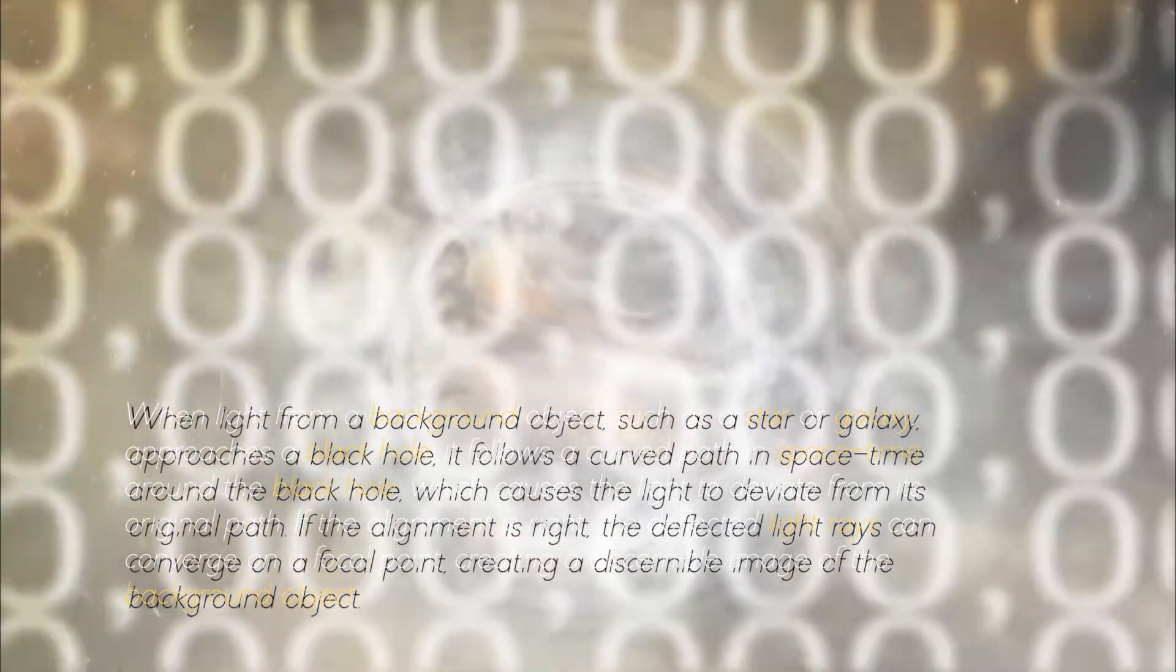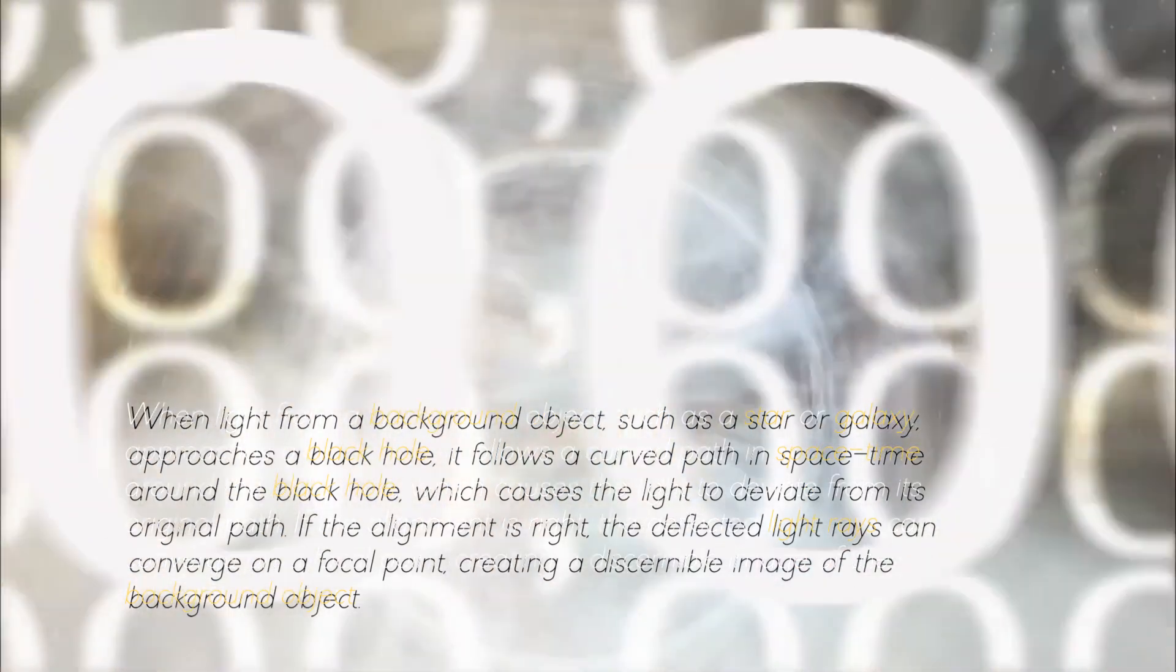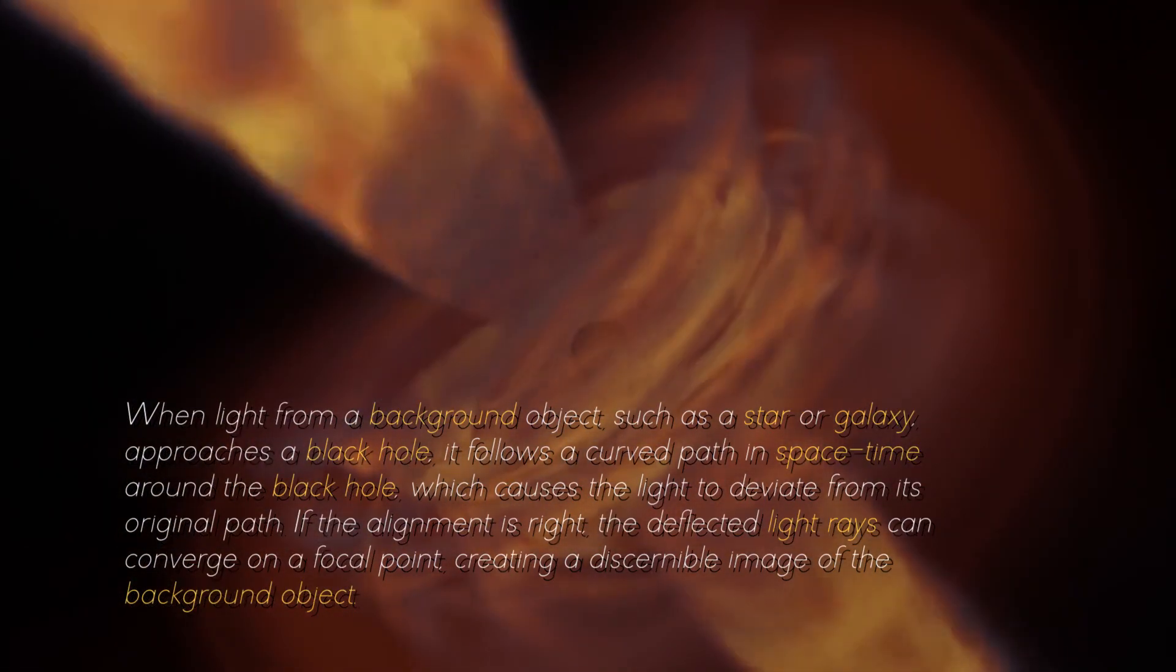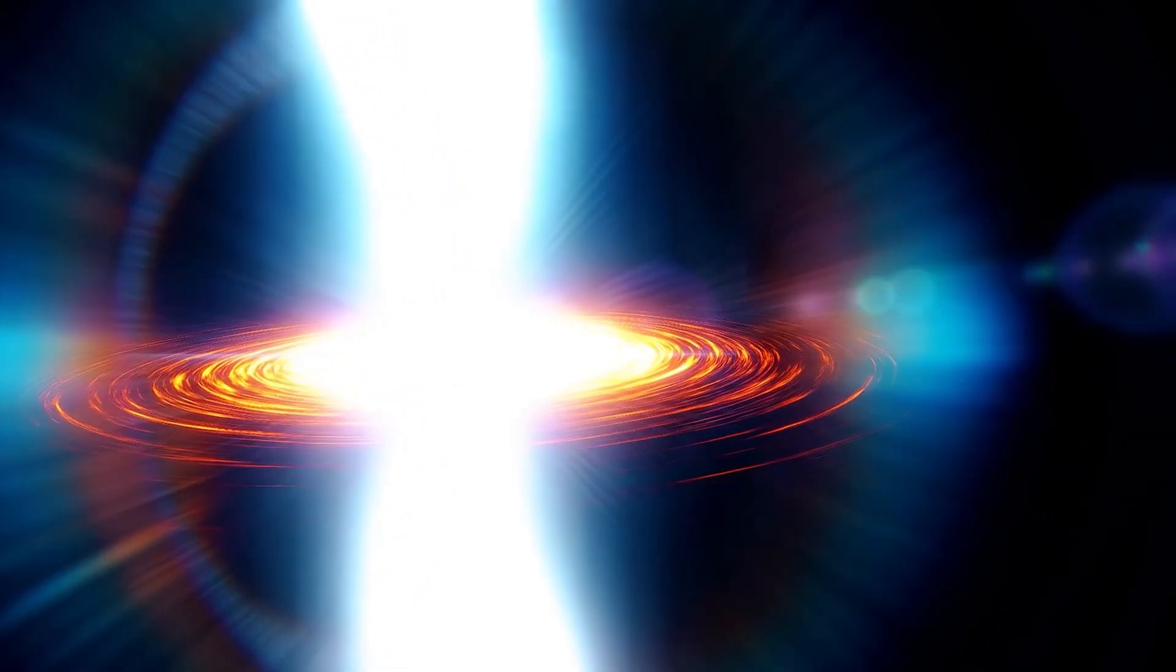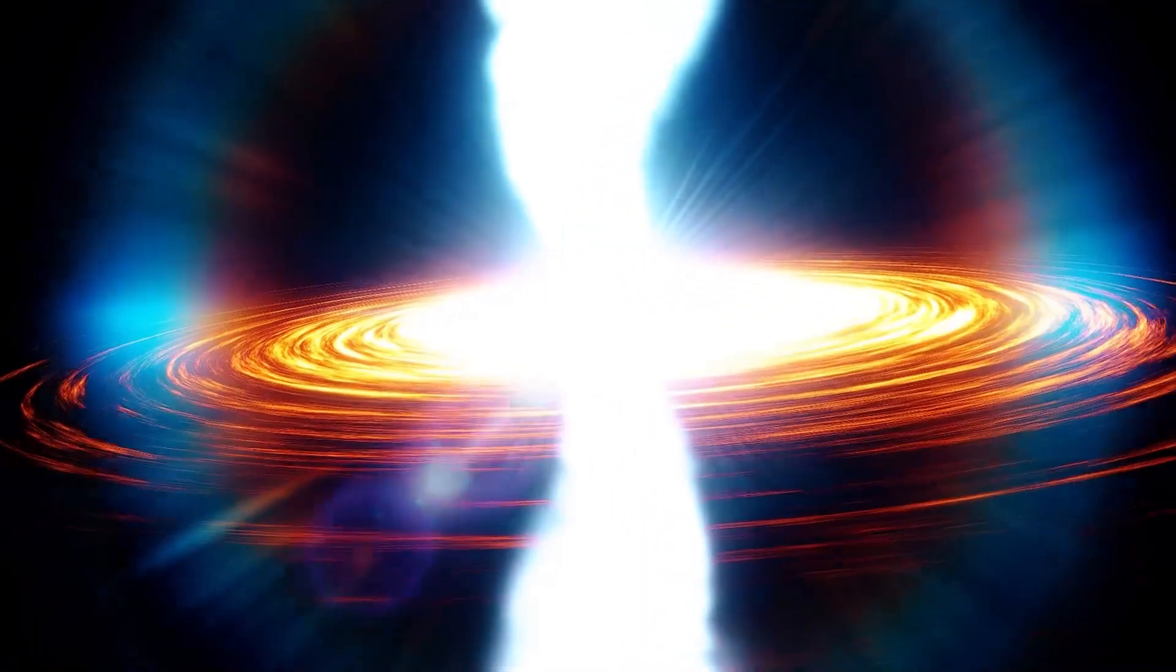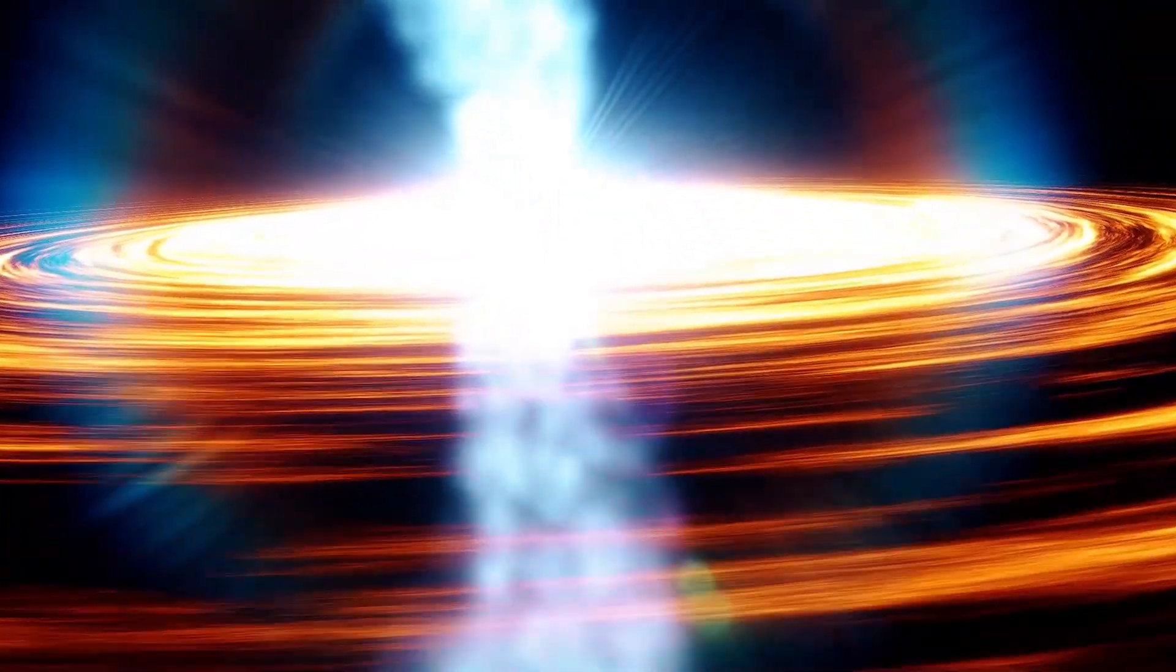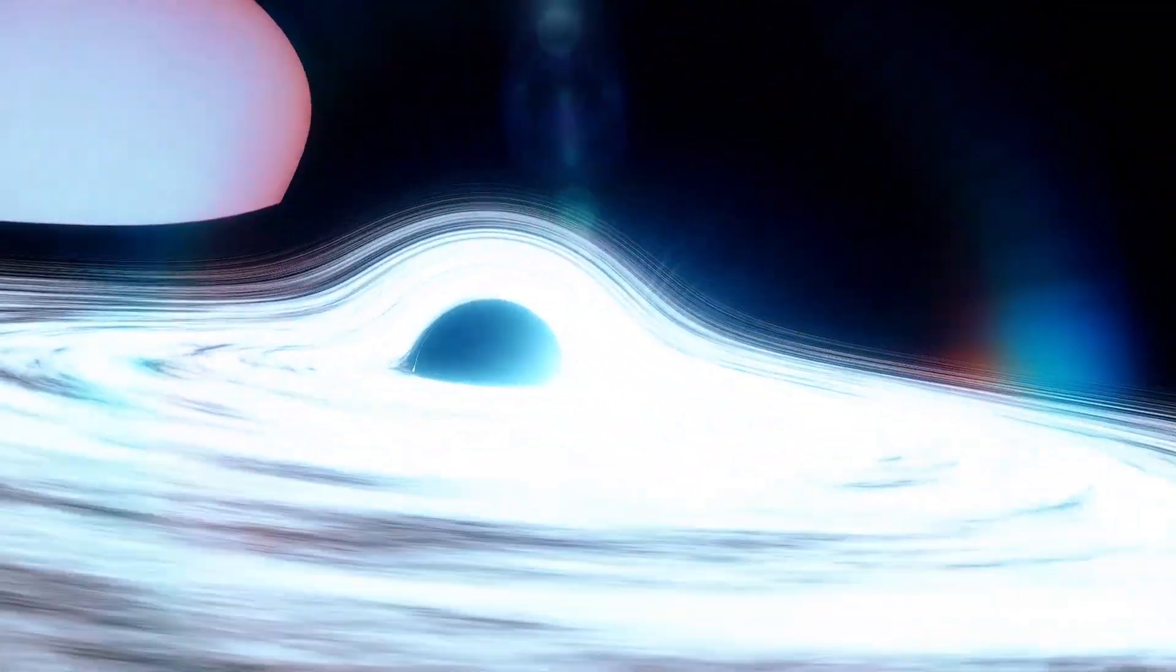If the alignment is right, the deflected light rays can converge on a focal point, creating a discernible image of the background object. By the way, have you ever heard of white holes? The concept of a white hole arises from the mathematical solutions to Einstein's field equations in the theory of general relativity. These solutions suggest the existence of regions in spacetime where matter and energy emerge in a manner analogous to how they are attracted to black holes.